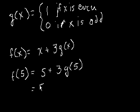So f of 5 is equal to 5 plus 3 times g of 5. Well, what's g of 5? If we put 5 here, if 5 is even, we do 1. If 5 is odd, we do 0. Well, 5 is odd, so it's 0. So this equals just 5, because 3 times 0 is equal to 0.